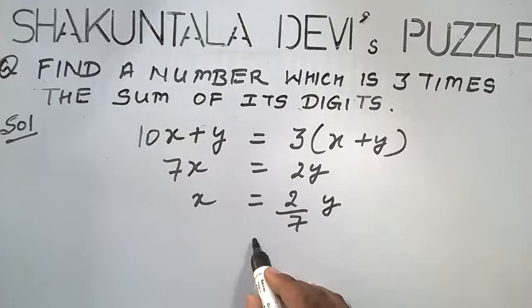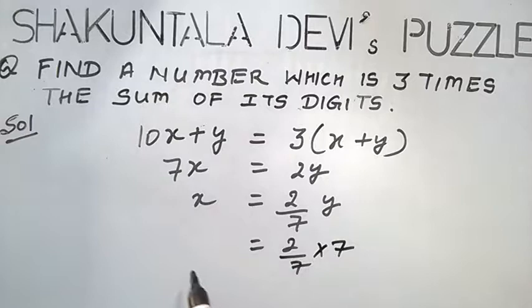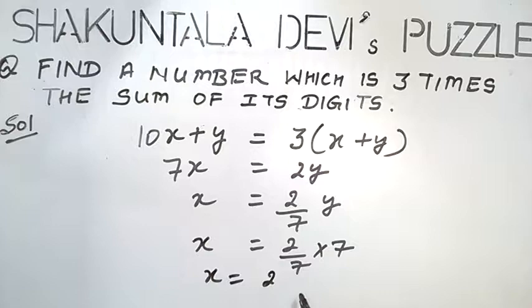To get the whole number, we take the value of y is 7. So that x will be 2.